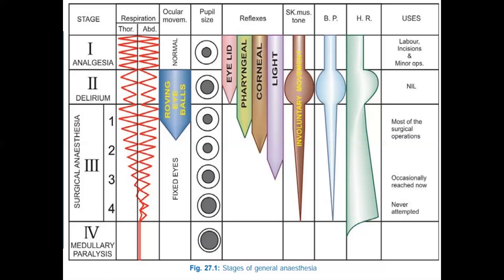Due to these responses we call it the delirium or excitement phase. Respiration can be irregular with breath holding — a change from Stage 1. There will be rolling eyeballs, and pupils will be slightly dilated compared to Stage 1. The eyelash reflex disappears in this stage, and respiration becomes irregular. There are essentially no surgical uses for this stage.